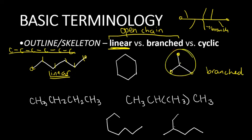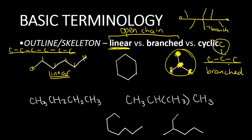If I draw this, we have three carbons right there — one, two, three — and at the carbon here in the middle, we have another carbon on top. So if this is a straight line, there's something bulging out from that, and that's a branch, giving further justice to the word branched.